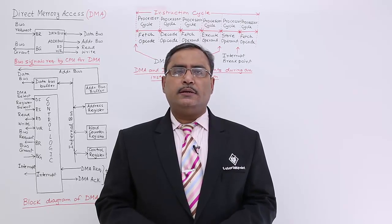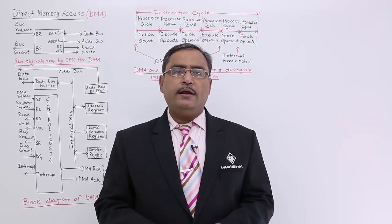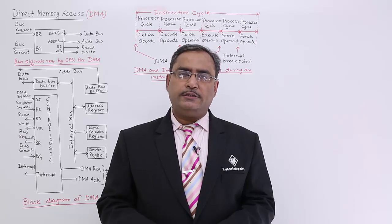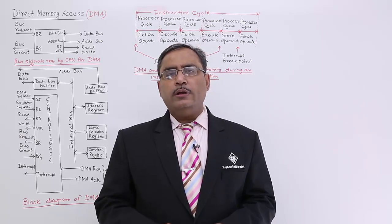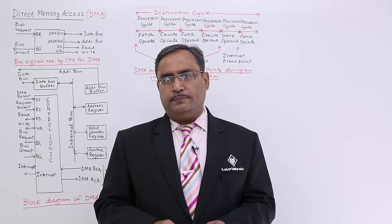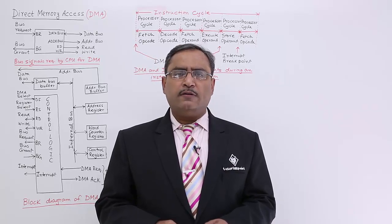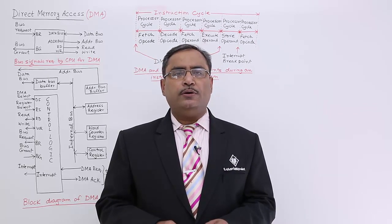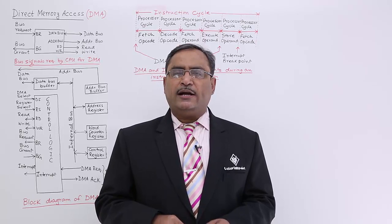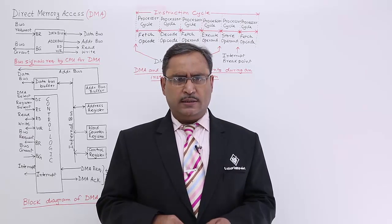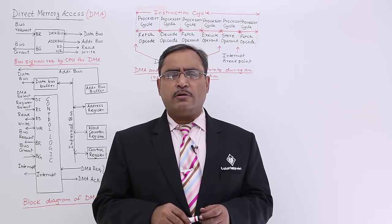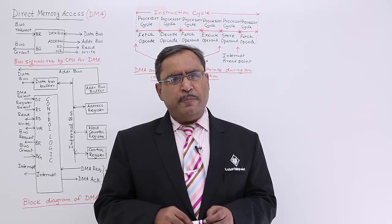This session we shall discuss DMA, that is the direct memory access, one of the very important topics in computer organization and architecture. Whenever we want to perform any kind of IO related activity, the processor can easily do that. But IO devices are very slow compared to the speed of processors, so if we ask the processor to do the IO operation, a speed mismatch will take place. The processor will have to wait for the IO devices to read or write data, and it is not meant for it.